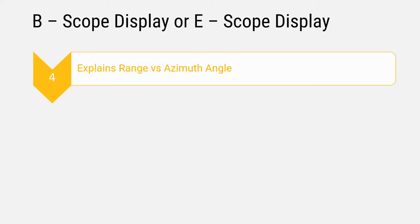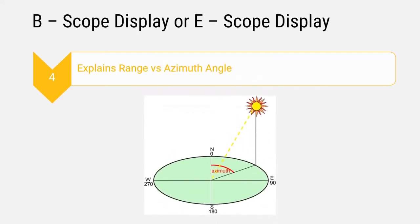We will look at a picture example. For example, in the picture we look at the sun as the target. We have North pole, South pole, East pole, and West pole. The azimuth angle is the angular distance measured from a reference direction — that is the azimuth angle used in the B scope display.